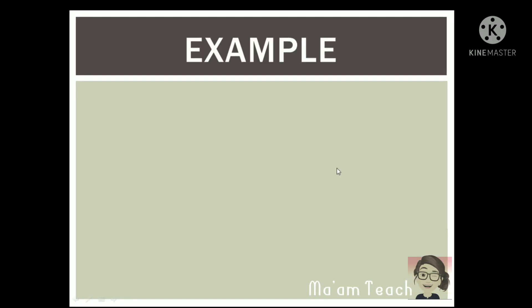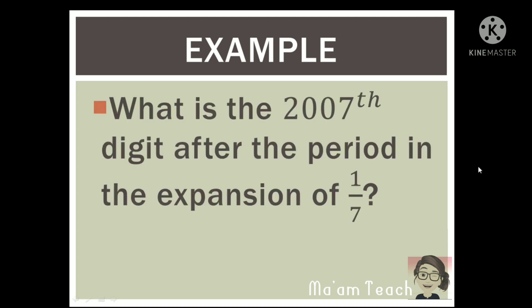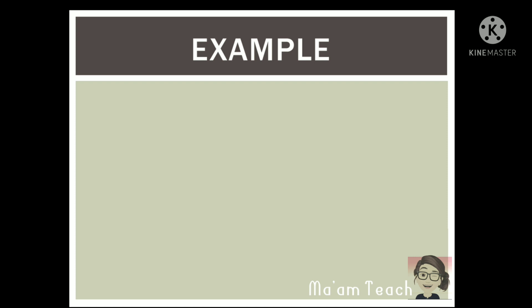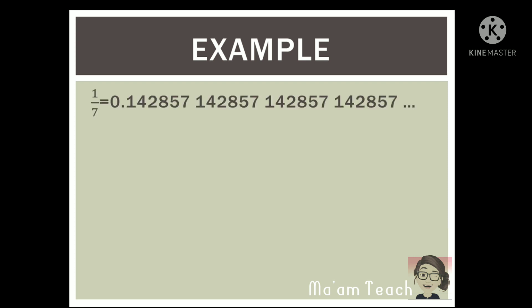Okay, so we have here an example which is seen in your exercise number one. What is the 2007th digit after the period in the expansion of 1 over 7? Now, if you could recall, the value of 1 over 7 — from your lecture, or if you use your calculator and evaluate 1 over 7 — the value is this. And if you could notice, the digits are repeating and continuous.